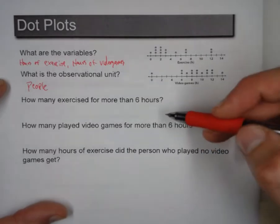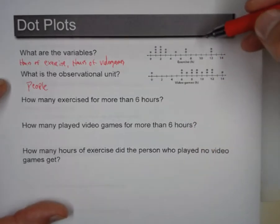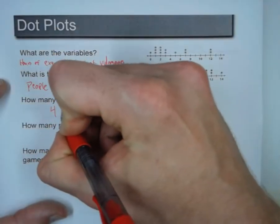Now, how many exercised for more than six hours? So we're looking at the exercise dot plot. And here we've got one, two, three, four. So that's four people.